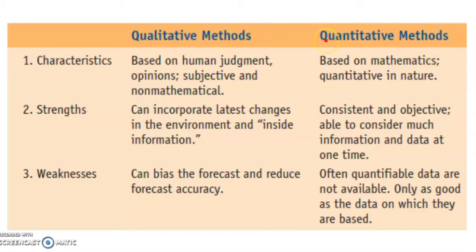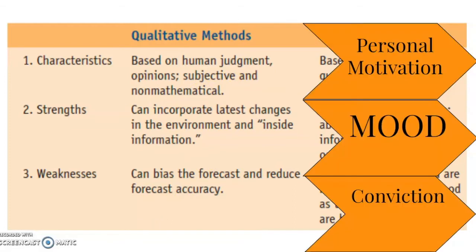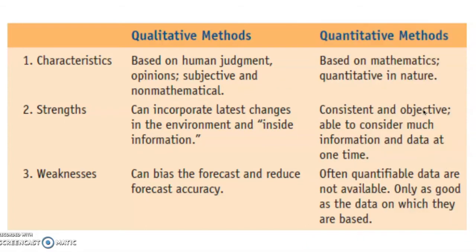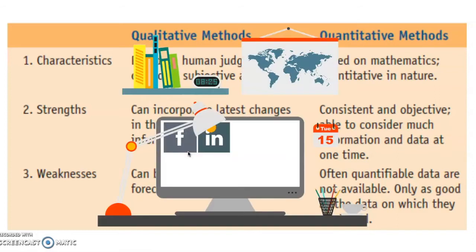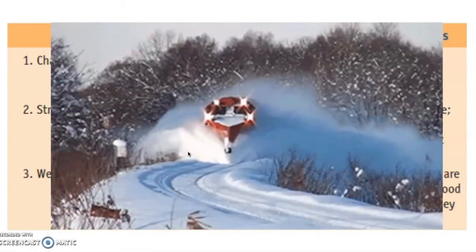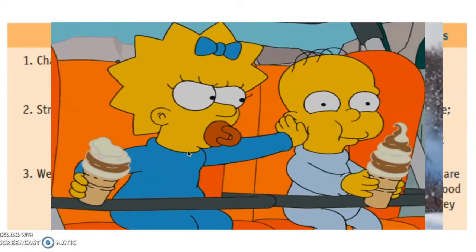Both qualitative and quantitative forecasting methods have strengths and weaknesses. Because qualitative methods are based on human judgment and opinions, they are subjective, non-mathematical, and can often be biased. These biases can be related to personal motivation — for example, 'They're going to set my budget based on my forecast, so I'd better predict high' — or mood, or conviction. But they also have the advantage of being able to incorporate last-minute inside information, such as an advertising campaign by a competitor, a snowstorm delaying a shipment, or a heatwave increasing sales of ice cream.